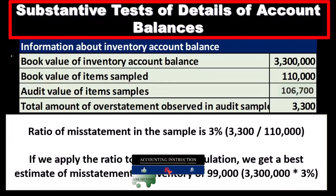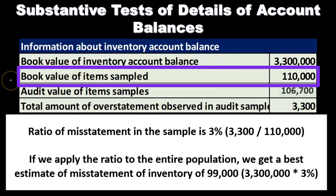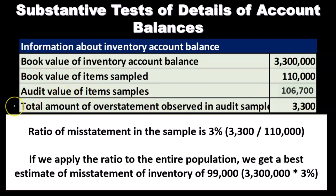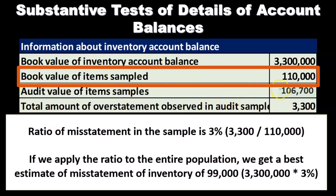Our example involves information about inventory account balances. We have a book value of inventory at $3,300,000. The book value of items selected in our sample is $110,000. When we go through our process, the audit value of items selected comes out to be $106,700. The difference between those two gives us a total overstatement observed in the audit sample of $3,300. The ratio of misstatement in the sample is 3%, calculated by dividing $3,300 by the book value of the items selected, $110,000.